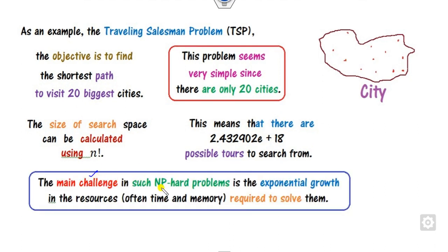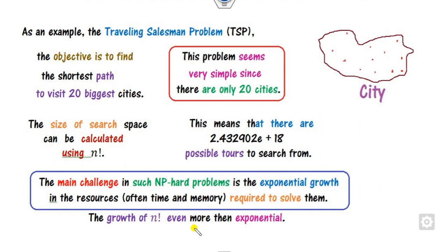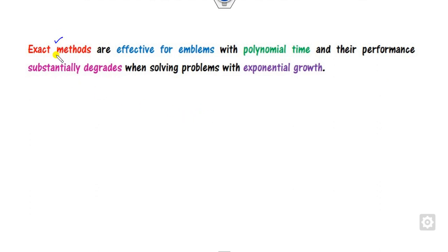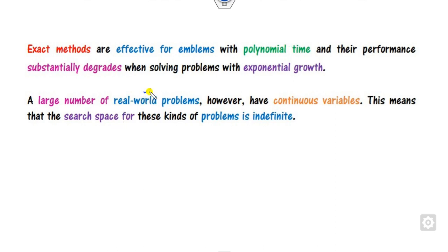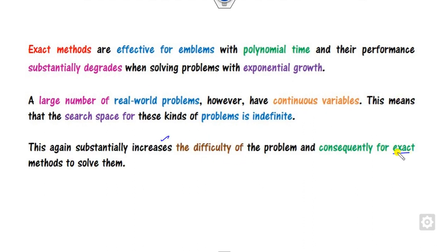The main challenge of such non-polynomial hard problems is the exponential growth. If you draw the graph of the exponential function and n factorial, you can see that the growth of n factorial is always more than that of the exponential. Whenever you increase the value of n, the complexity increases. Exact methods are effective for polynomial time problems, but in real-world problems there are always continuous variables, making the search space indefinite. As size increases, this grows in an x to the power n form, increasing difficulty and making exact methods inadequate.